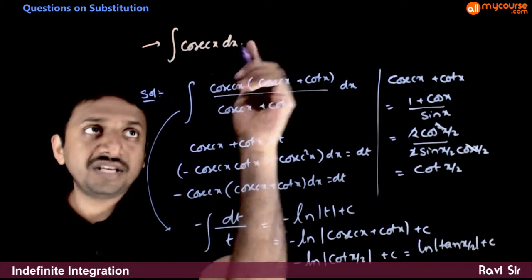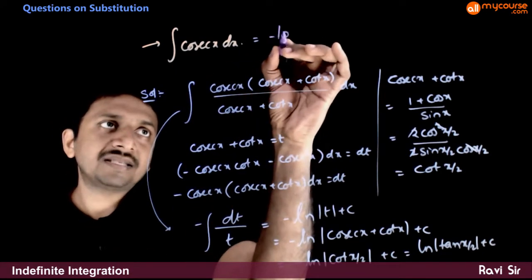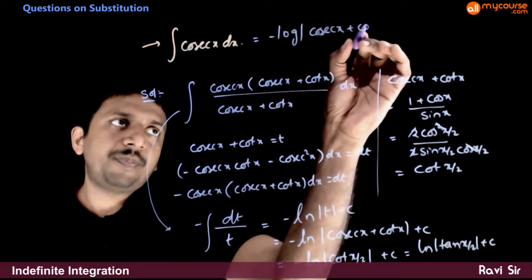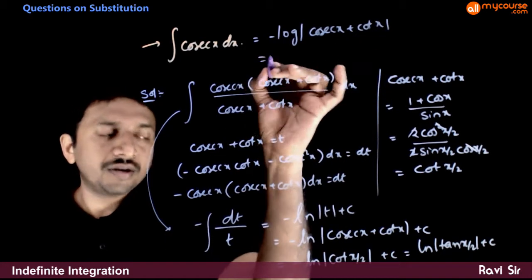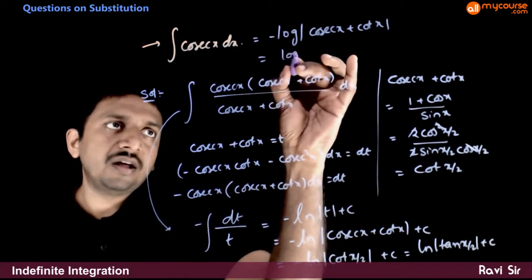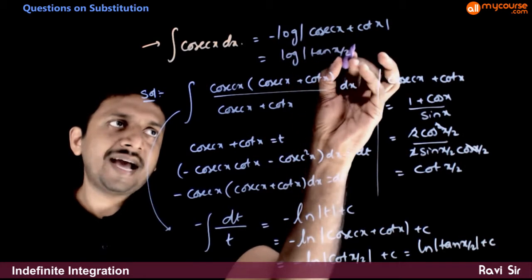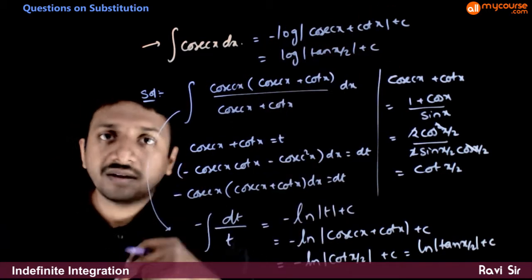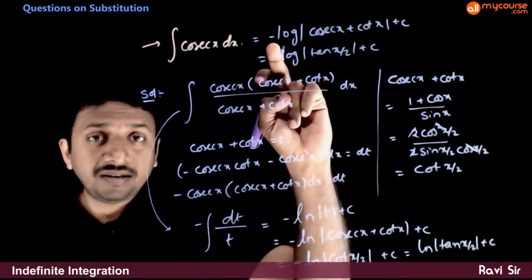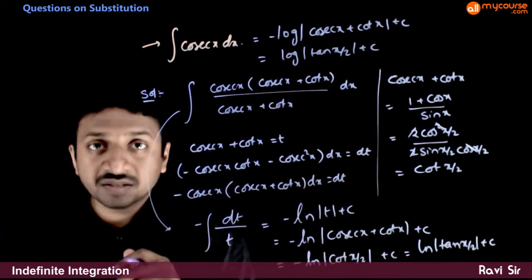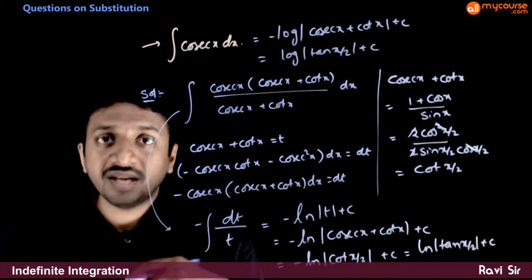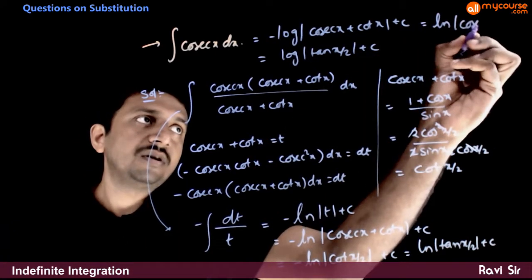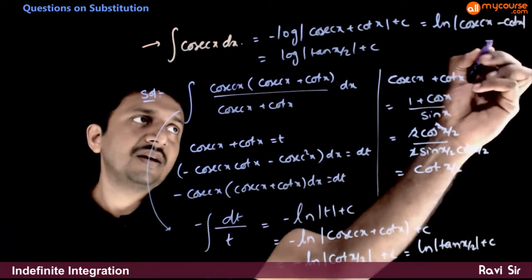So integration of cosecant x can be written as minus log|cosecant x plus cot x|, or as log|tan(x/2)| plus c. Or, taking the power of minus 1 inside the log, since 1 over (cosecant x plus cot x) equals cosecant x minus cot x, this can also be written as log|cosecant x minus cot x| plus c.